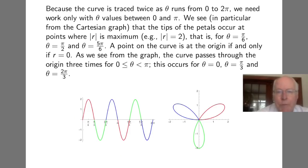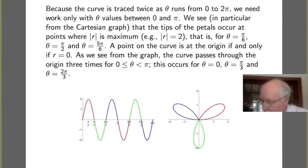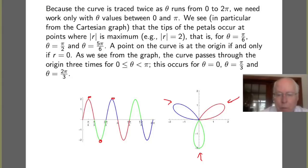In our analysis, because the curve is traced twice as theta runs from 0 to 2 pi, we really only have to work with theta values between 0 and pi. In particular, we see from the Cartesian graph that the tips of the petals occur at points where the absolute value of R is maximum — those get us as far from the origin as we can, and that's what we mean by the tips of these petals.